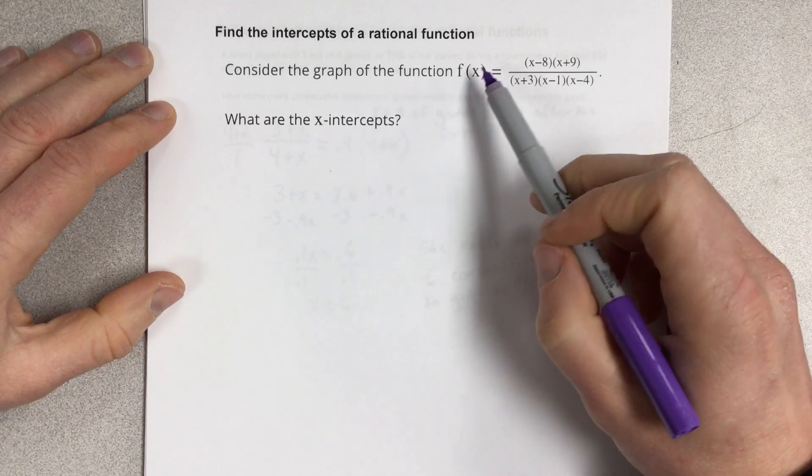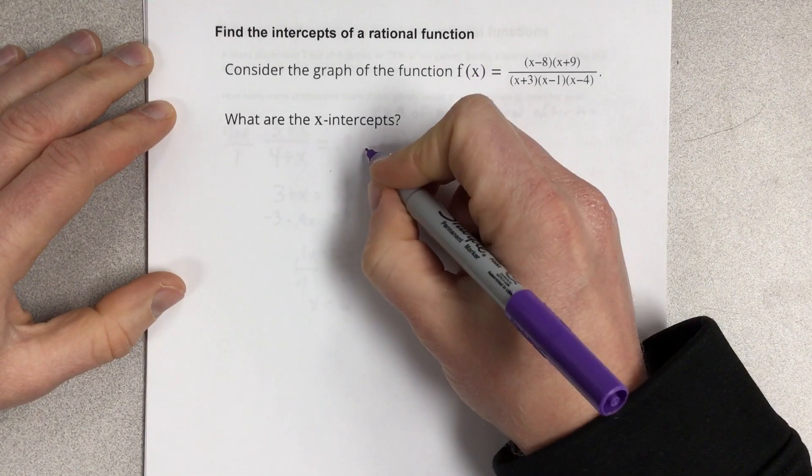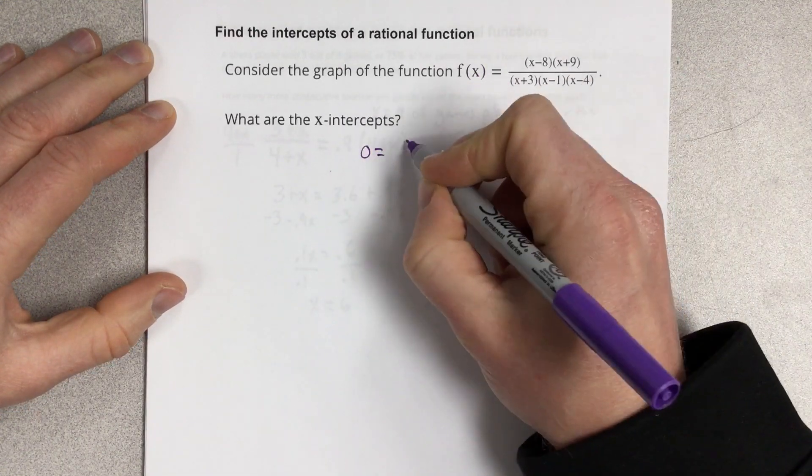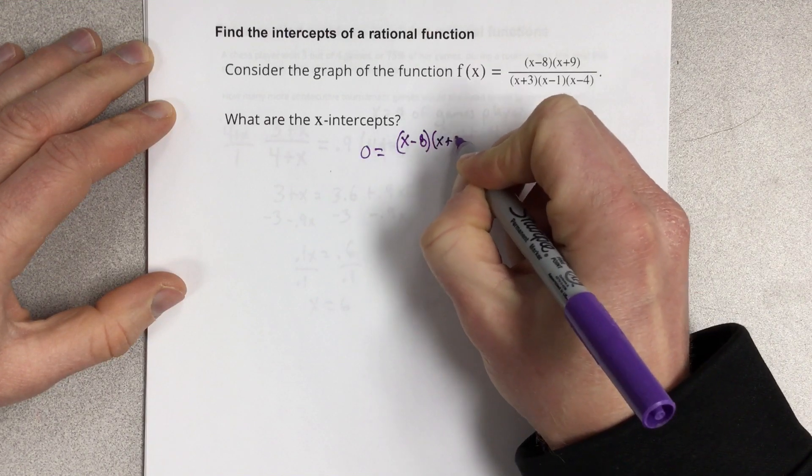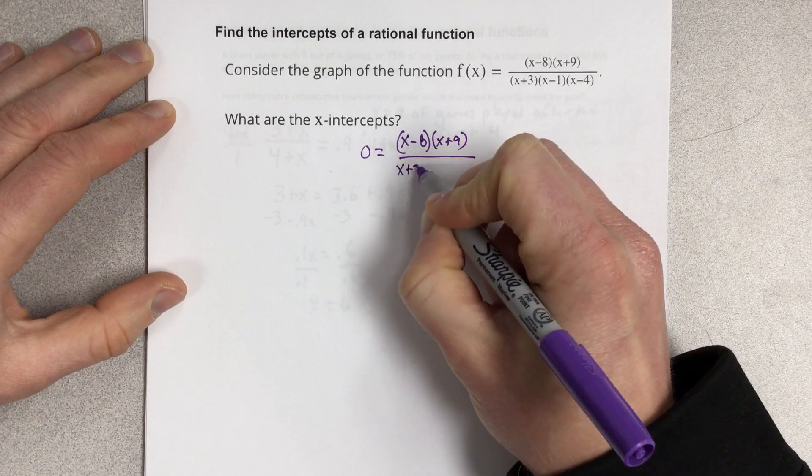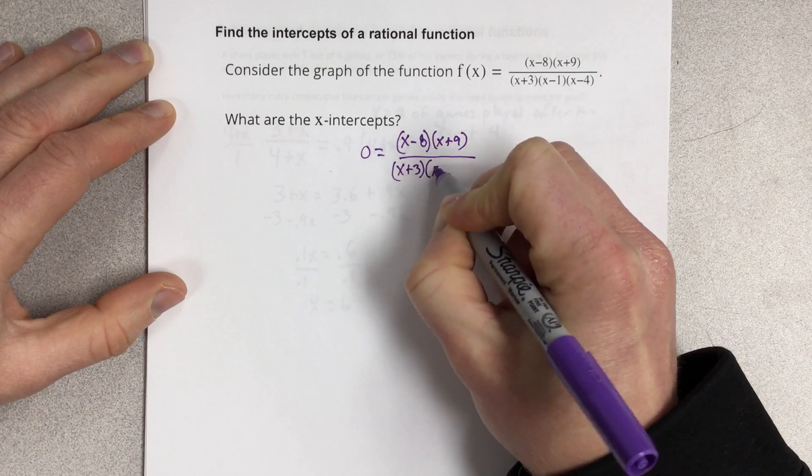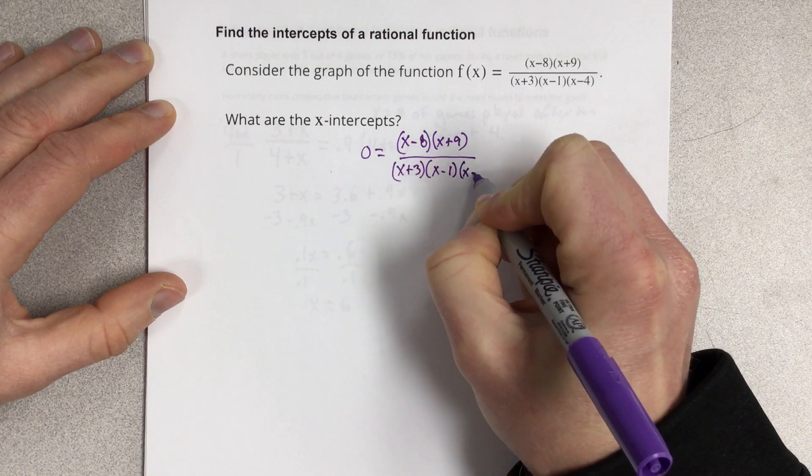We know to find the x-intercepts, we set y equal to 0. So we'd have 0 equals (x - 8)(x + 9) over (x + 3)(x - 1)(x - 4).